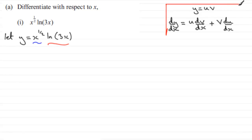So a rule then that I would encourage you to try and remember even though it might well be in your formula book. So when we come to differentiating this, I'm going to have u as being x to the power half and v as being the natural log of 3x.